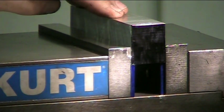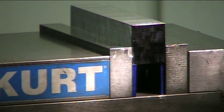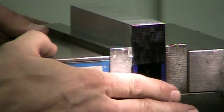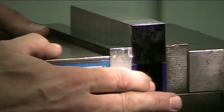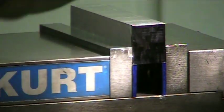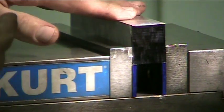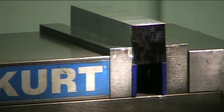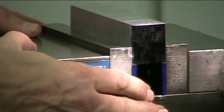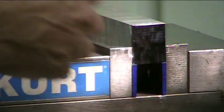Now more than likely your parallels will be loose, so you take a dead blow hammer and hit the top of your material. That actually sets your material on top of the parallels and pushes your parallels down to sit squarely on the bottom of your vise.